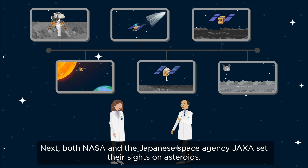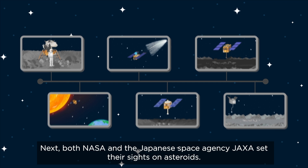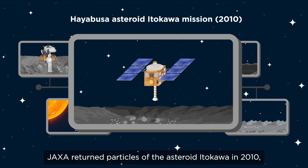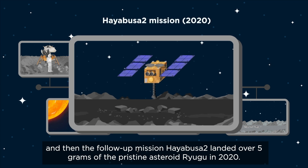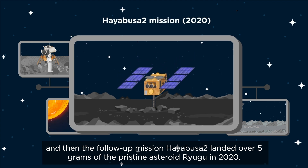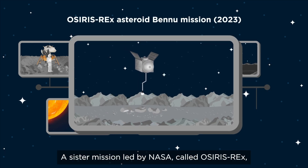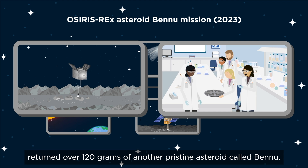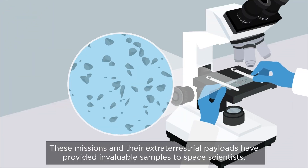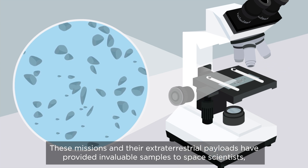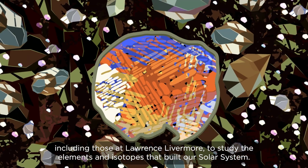Next, both NASA and the Japanese space agency JAXA set their sights on asteroids. JAXA returned particles of the asteroid Itokawa in 2010, and then the follow-up mission HAYABUSA2 landed over 5 grams of the pristine asteroid Ryugu in 2020. A sister mission led by NASA called OSIRIS-REx returned over 120 grams of another pristine asteroid called Bennu. These missions and their extraterrestrial payloads have provided invaluable samples to space scientists, including those at Lawrence Livermore.